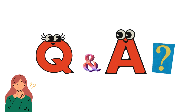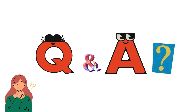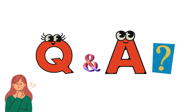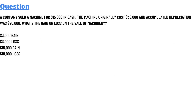Today we'll be discussing an MCQ, so let's get started. The question: a company sold a machine for fifteen thousand dollars in cash. The machine originally cost thirty-eight thousand dollars and accumulated depreciation was twenty thousand dollars. What's the gain or loss on the sale of machinery? We have four options given here: three thousand dollars gain,